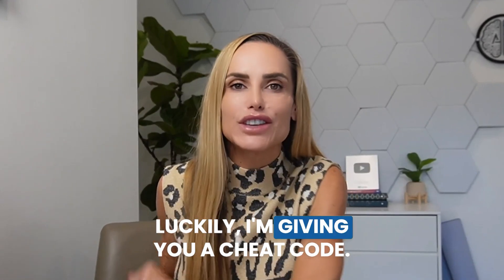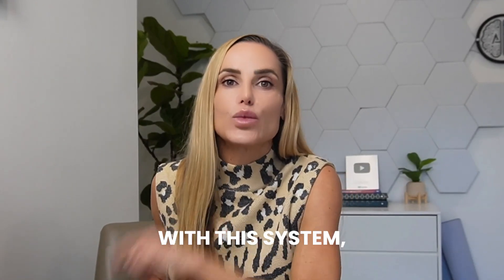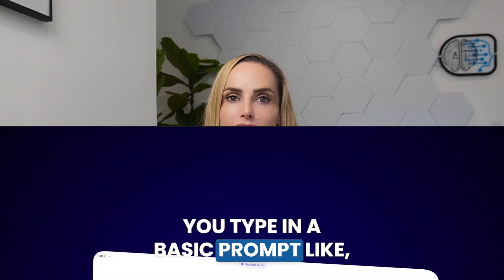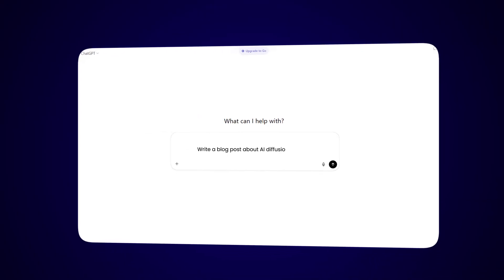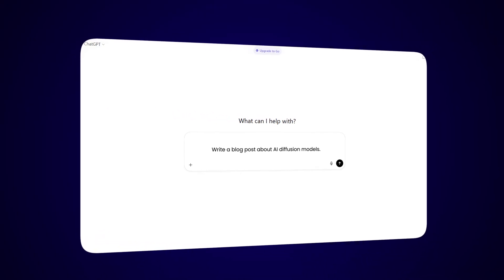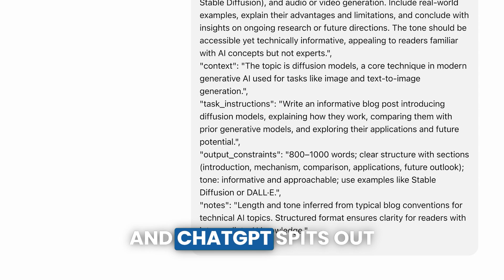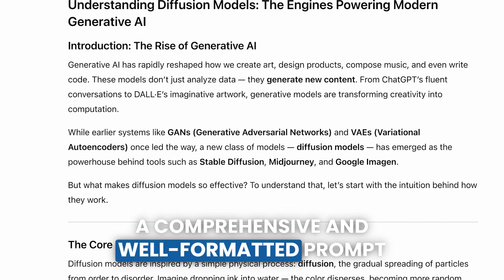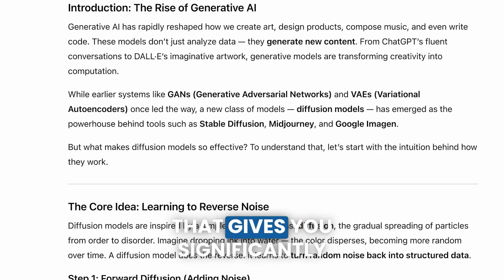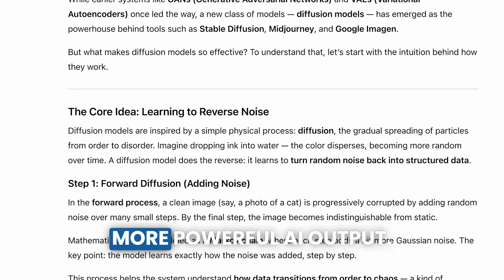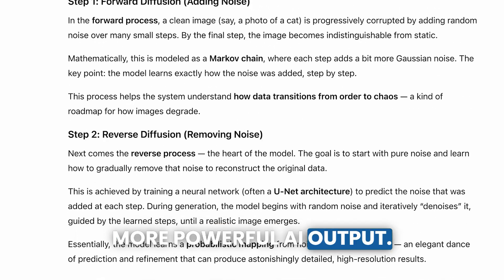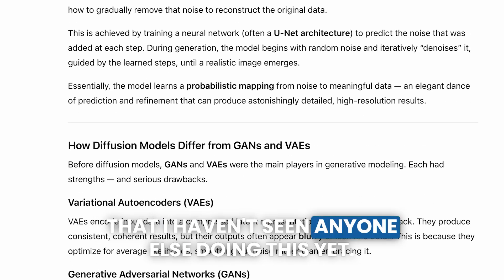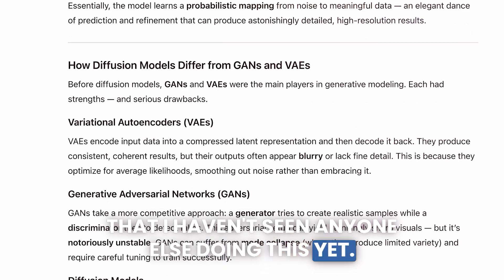Luckily, I'm giving you a cheat code. With this system, you type in a basic prompt like "write a blog post about AI diffusion models" and ChatGPT spits out a comprehensive and well-formatted prompt that gives you significantly more powerful AI output. I'm honestly shocked that I haven't seen anyone else doing this yet.